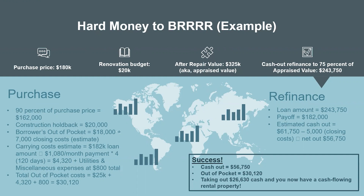You're getting $162,000 at close, so you come in with your 10% down payment plus closing costs, and we're doing a construction holdback of $20,000. Borrower's out-of-pocket is $18,000 plus an estimated $7,000 in closing costs — covering title, escrow, points, fees, and lender costs. Carrying costs on $182,000 is an interest-only payment of $1,080 a month. Figuring four months, that's about $4,320 in monthly debt service. Utilities: let's figure $800 for those four months. Total out-of-pocket during these four months: $30,120.